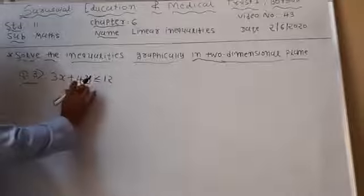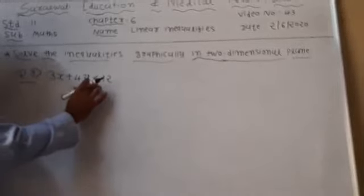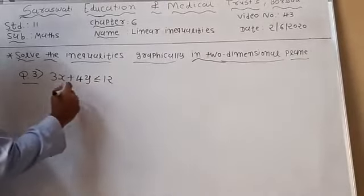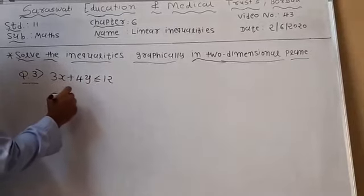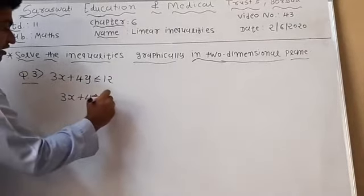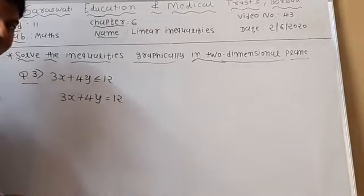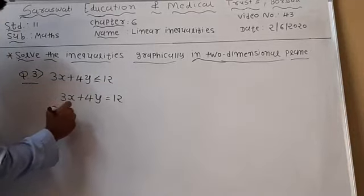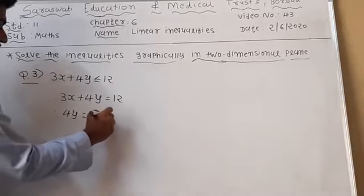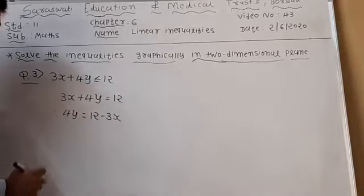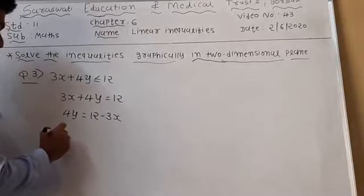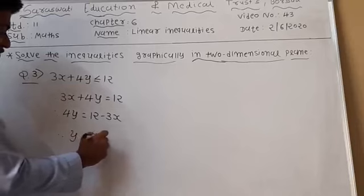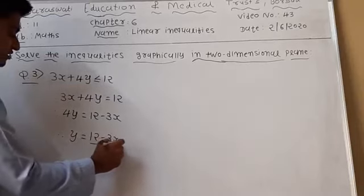Here 3x plus 4y less than or equal to 12 is given. First of all, replace the inequality with equality, so we write 3x plus 4y is equal to 12. Now convert the equation into the form of y. So 4y is equal to 12 minus 3x. After dividing by 4, y is equal to (12 minus 3x) upon 4.